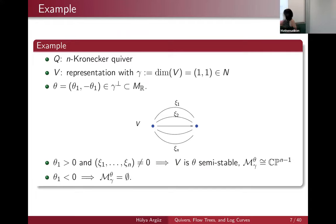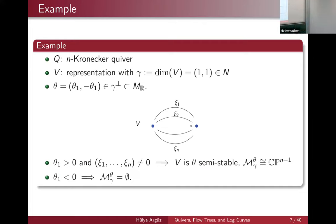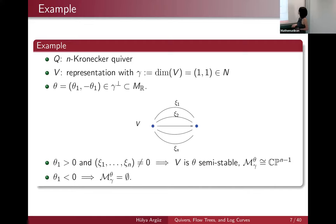Here's a simple example. If you look at the n-Kronecker quiver, which is the quiver of just two vertices and n arrows between them, and you fix the dimension vector gamma to be (1,1), then for any theta = (theta_1, -theta_1) in gamma-perp, one can show that if you take theta_1 smaller than zero, there won't be anything semi-stable. If you take theta_1 bigger than zero, then the moduli space of all quiver representations for any such theta will be isomorphic to CP^{n-1}. The reason is you're essentially having a copy of C here and a C there, and a map between C and C is determined by a complex number — n complex numbers not all zero gives you CP^{n-1}.